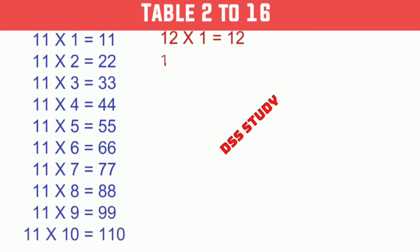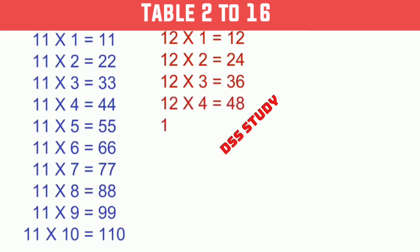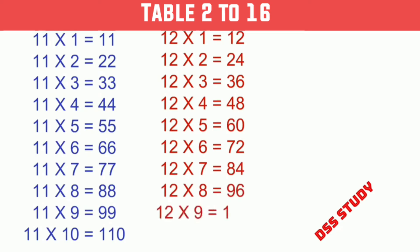12 times 1 is 12, 12 times 2 is 24, 12 times 3 is 36, 12 times 4 is 48, 12 times 5 is 60, 12 times 6 is 72, 12 times 7 is 84, 12 times 8 is 96, 12 times 9 is 108, 12 times 10 is 120.